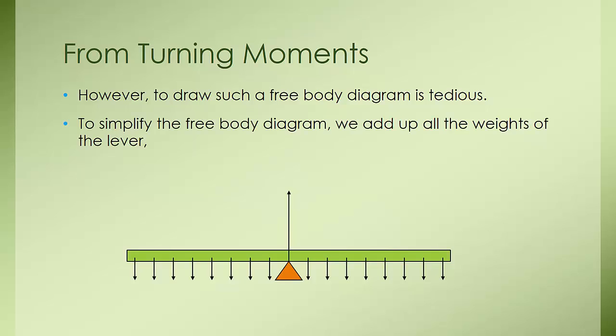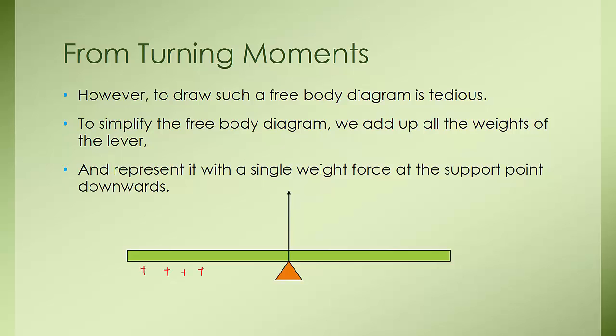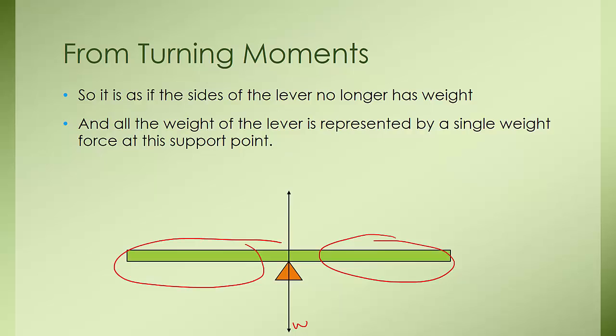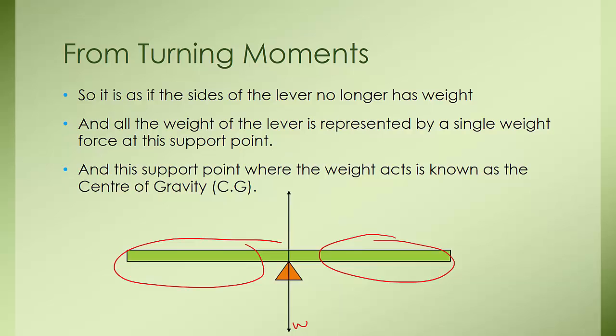To simplify, we can add up all the weights of the lever and represent them by just a single weight force at the support point, acting downwards. This indicates that the lever is sufficiently supported by the normal force and will not go up or down. In this representation, it is as if the sides no longer have any weight and all the weights are concentrated right at the center — at this particular point. All the weight is represented by a single weight force at this support point, and this point where the weight acts is known as the center of gravity, or CG.